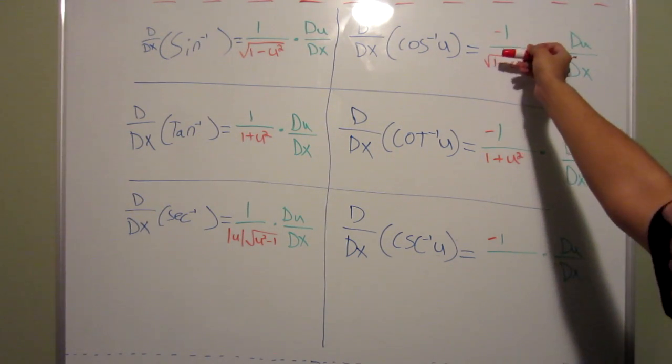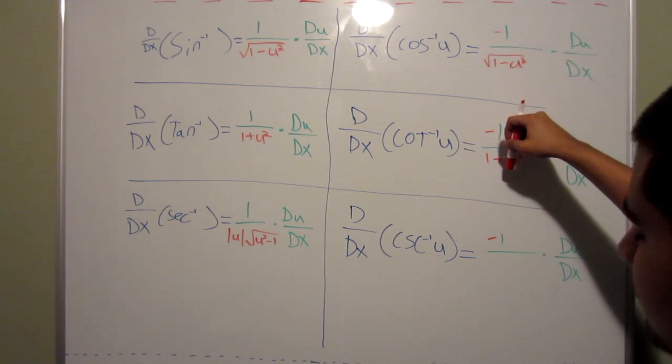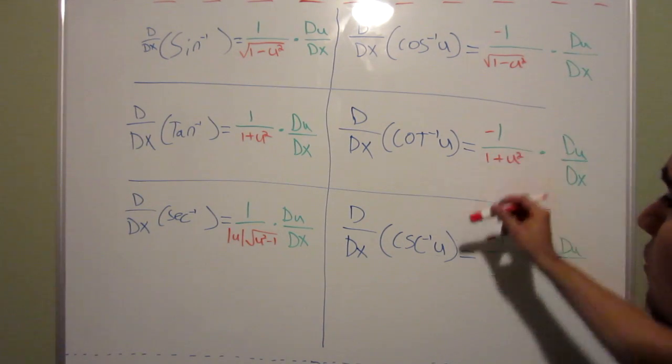The derivative of arc cotangent would be negative one over one plus u squared. So the same thing, the root, you move it down, make it a plus sign, and then to go to cosecant.